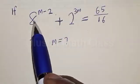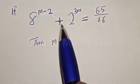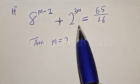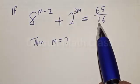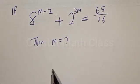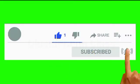8 raised to power m minus 2 plus 2 raised to power 3m is equal to 65 divided by 16. But before we proceed, please don't forget to like, share, comment and subscribe. Thank you.